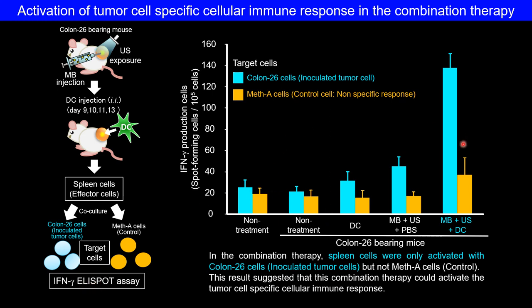This is the result. In this combination therapy, spleen cells were significantly activated with colon-26 cells but not Meth-A cells. It was suggested that this combination therapy could activate a tumor cell-specific immune response.